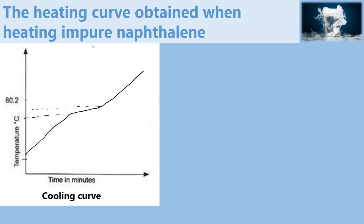So naphthalene will begin to melt at a range of temperatures below the actual melting point, and this is the cooling curve for impure naphthalene.